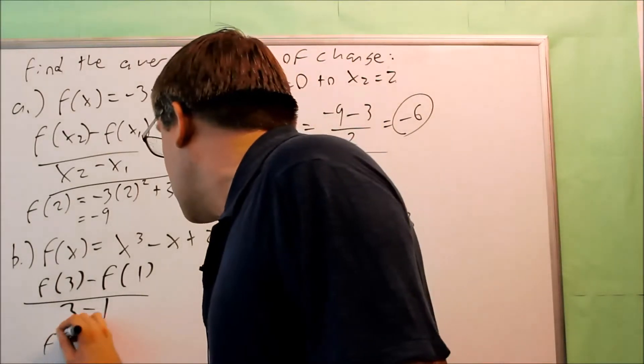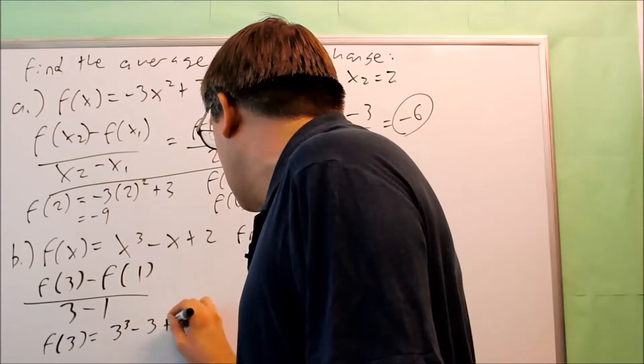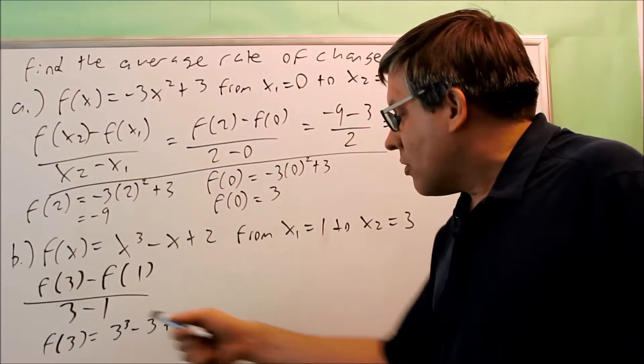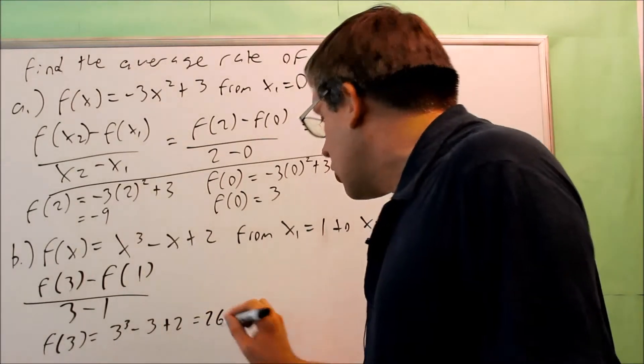So for f of 3, we'll do that down here. f of 3 is equal to 3 cubed minus 3 plus 2. 27 minus 3 plus 2, that's going to give you 26.